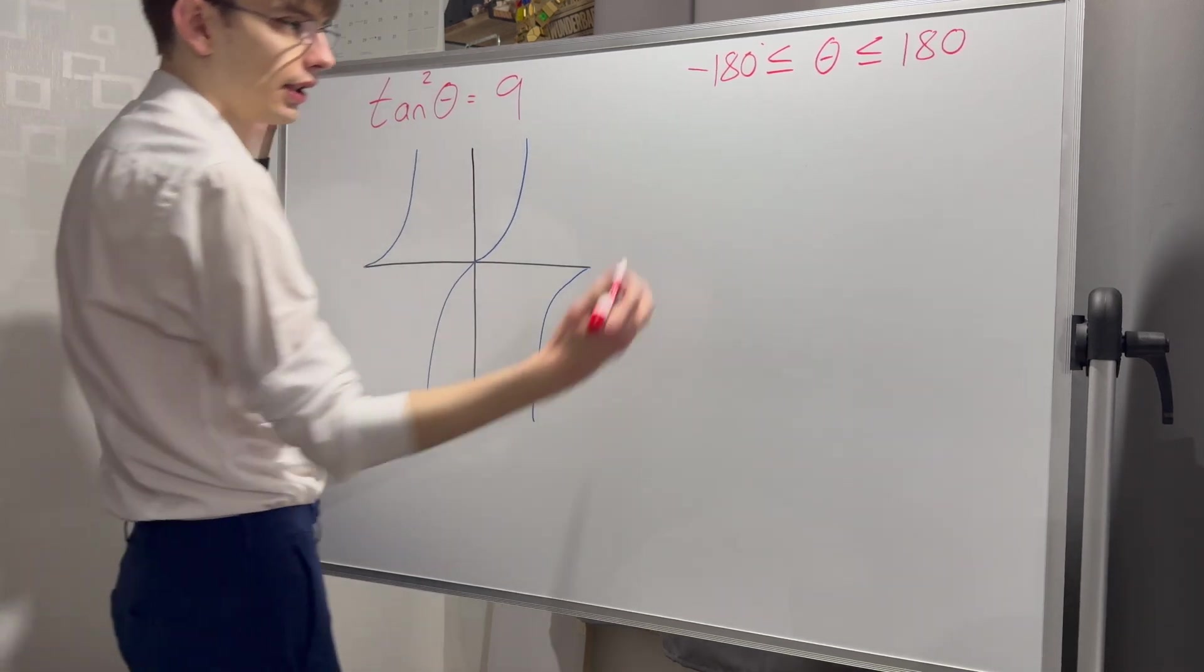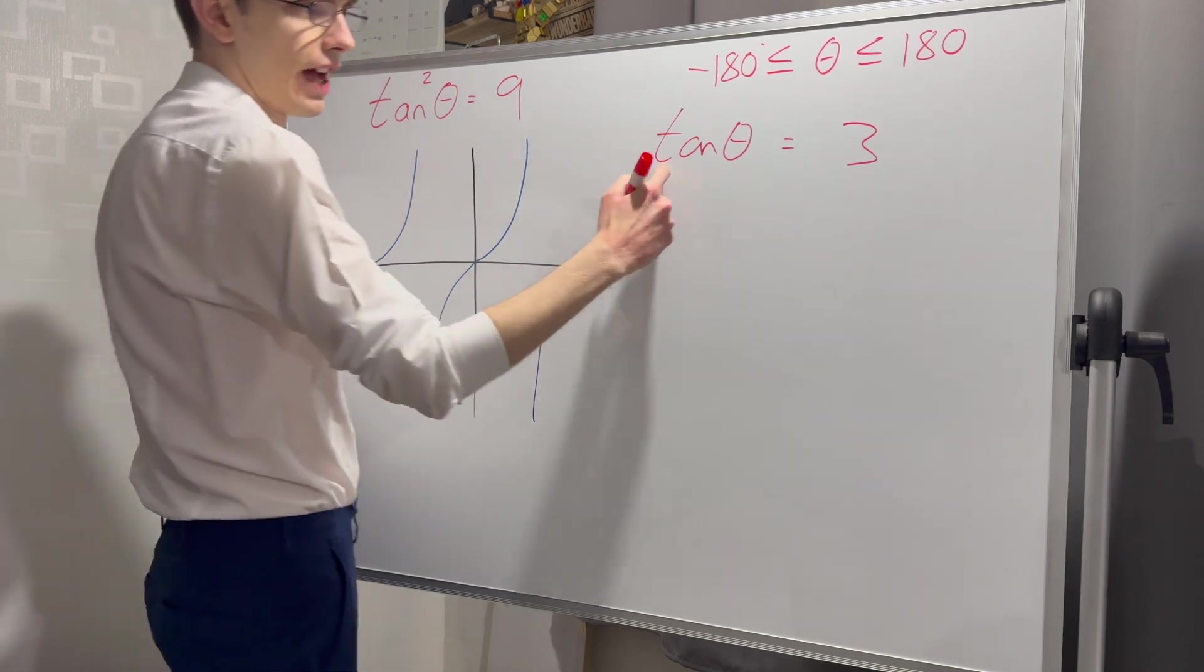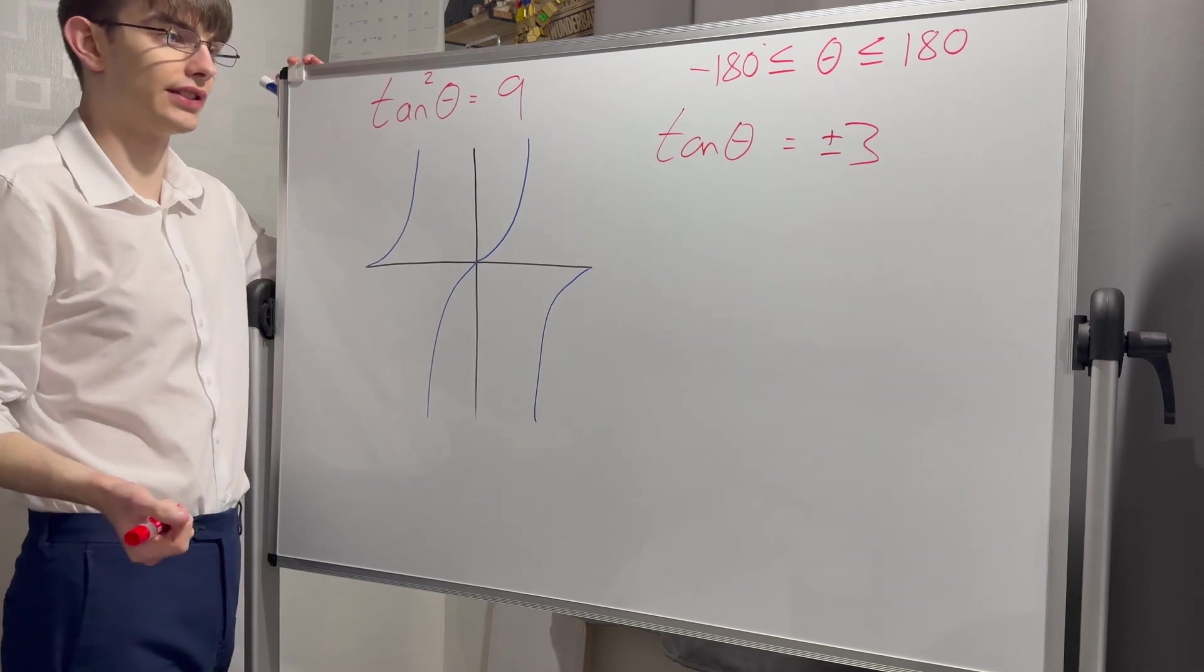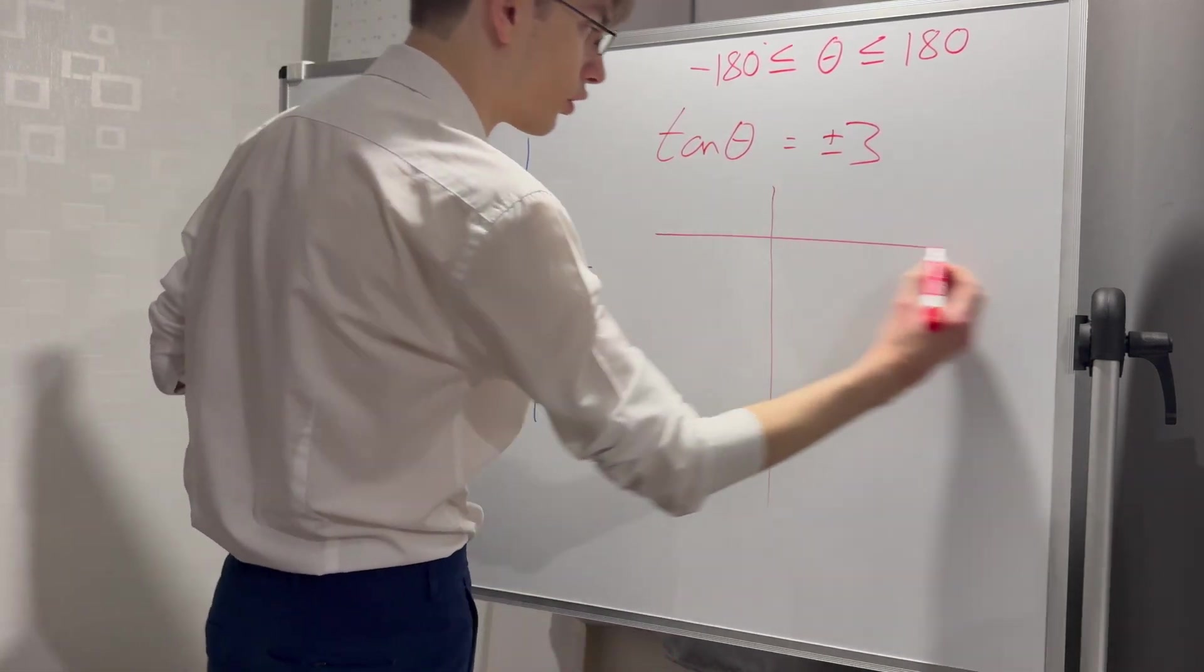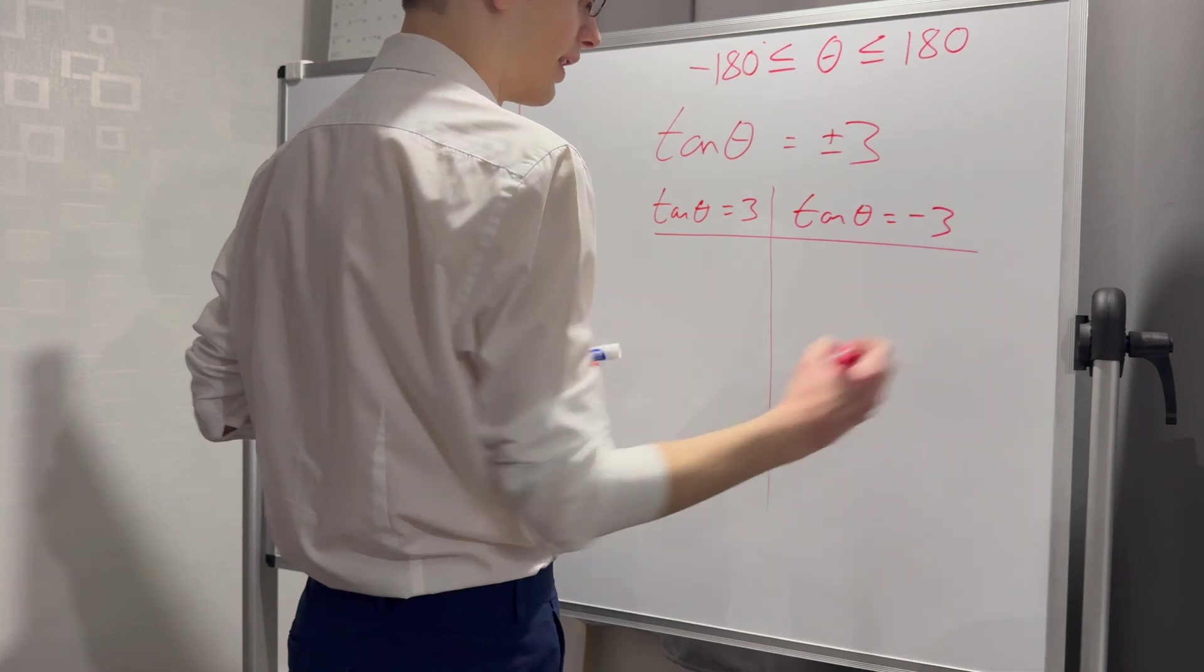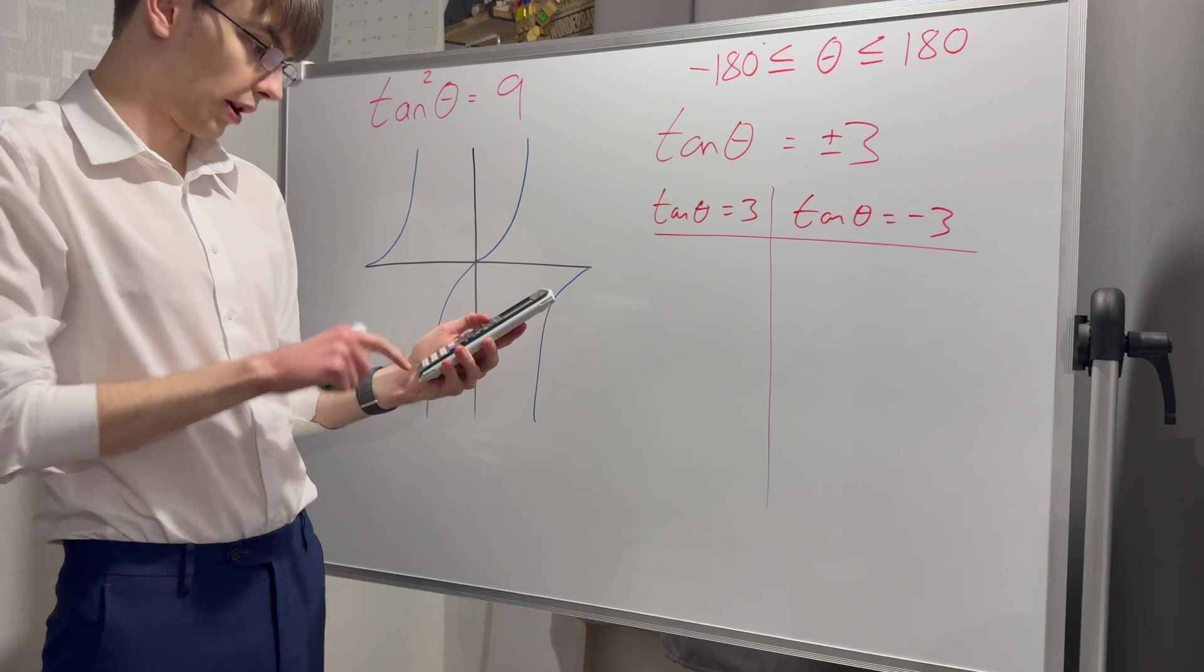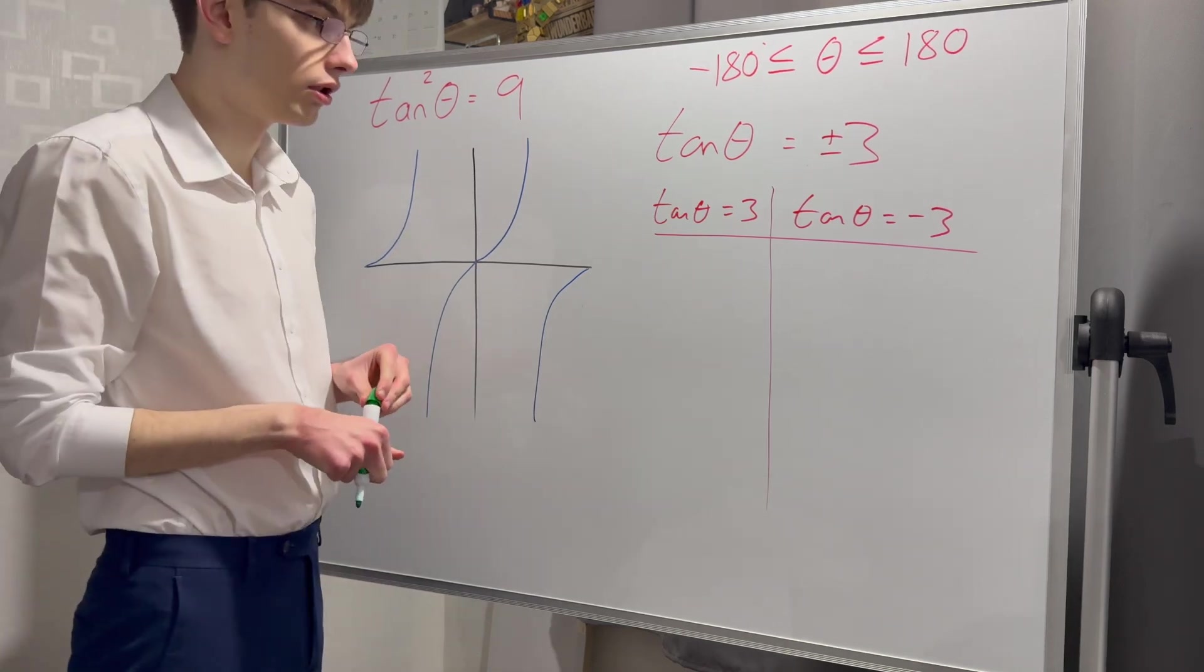If I solve this for tan theta, I need to get it as tan equals something. I'm going to square root both sides and get tan of theta equals three, right? No. Tan theta is plus or minus three. Always remember that if we are square rooting an integer, it is plus or minus the answer. Every time. Which means I'm going to need to do my process twice.